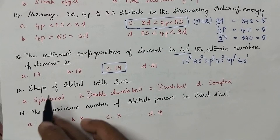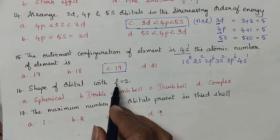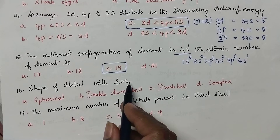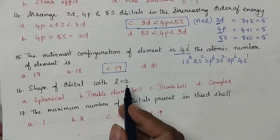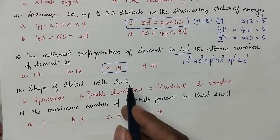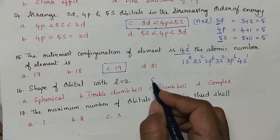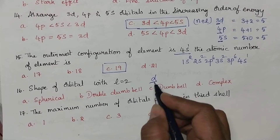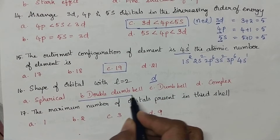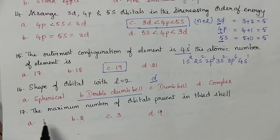The shape of orbital with l equal to 2: if l is equal to 2, the given orbital is d. Hence, the shape of the orbital is double dumbbell.